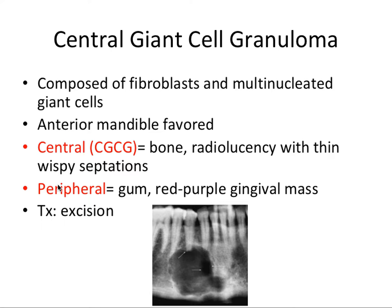The central lesion affects bone and can be seen radiographically, whereas the peripheral form only affects soft tissue and won't appear radiographically. CGCG is a commonly used abbreviation for central giant cell granuloma. The radiolucency you'll see has these thin, wispy septations, but that is not pathognomonic, so you need to include this lesion in your differential. Until you take a biopsy and find multinucleated giant cells, that's when you can make a definitive diagnosis.